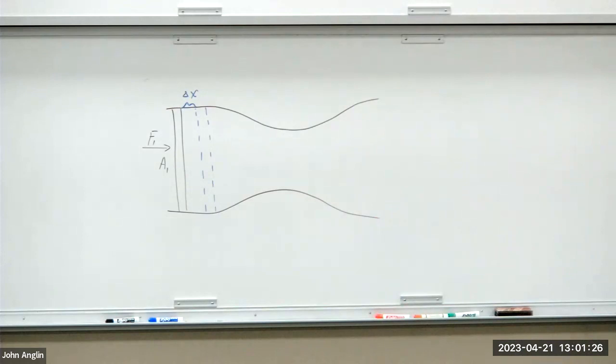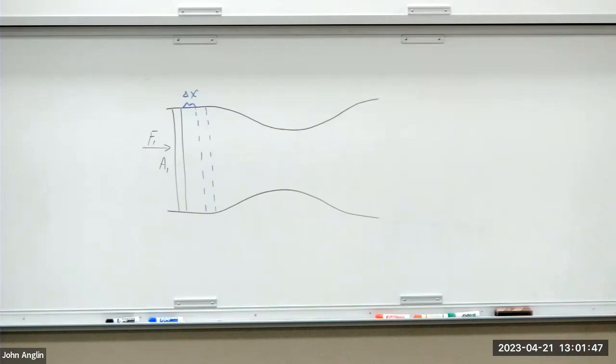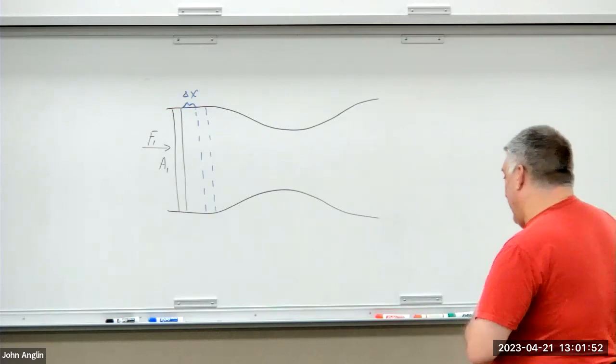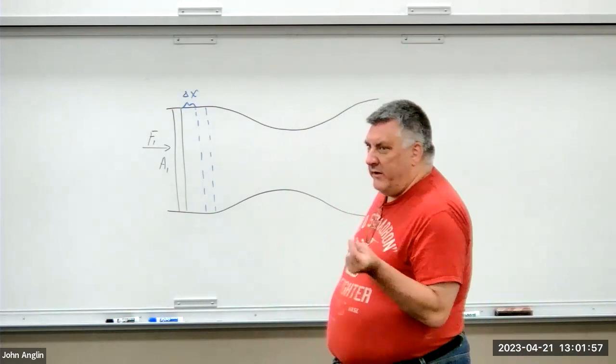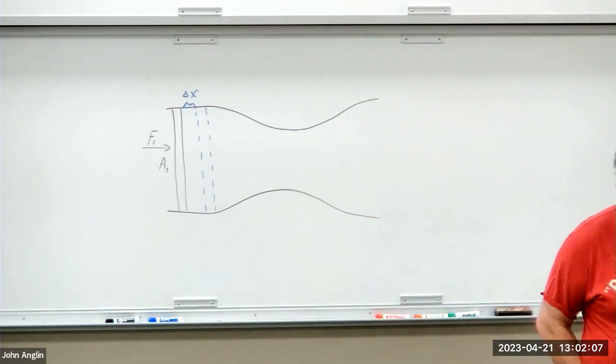And this is a derivation of something called Bernoulli's Principle. So you've probably heard of Bernoulli's Principle at some point. Bernoulli's Principle is talking about the relationship between a fluid's pressure and its velocity. In short, what Bernoulli theorized is that as the velocity of a fluid through some pipe or something increases, the pressure it exerts must decrease.